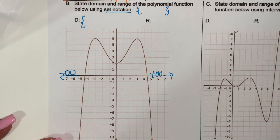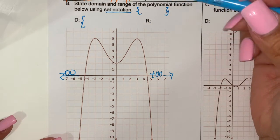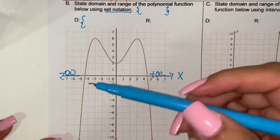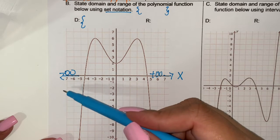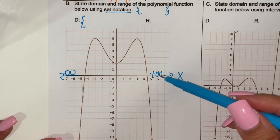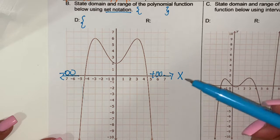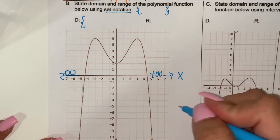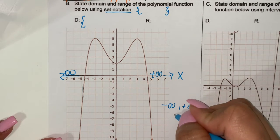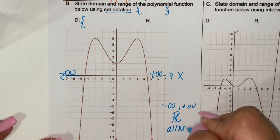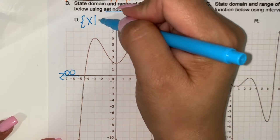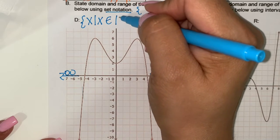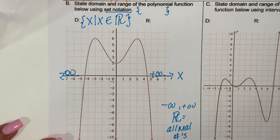State domain and range of the polynomial function using set notation — this is the one with the braces — and this is the x-axis first. Is there anything stopping the graph from going negative on the x-axis? No, so it's negative infinity. Is there anything stopping the graph from increasing positively on the x-axis? No, so it's positive infinity. When you talk about negative infinity and positive infinity, you're also saying this is all real numbers — and that's what that symbol means. So it's going to be x such that x is an element of all real numbers, which is just that big R. Domain is done.